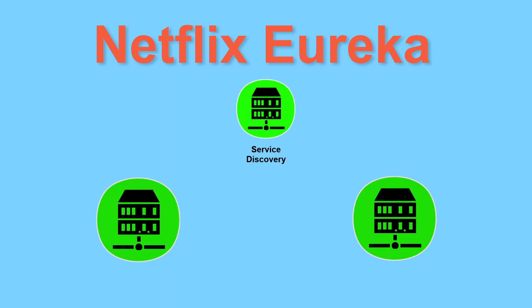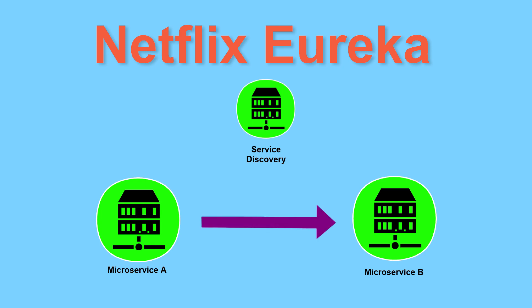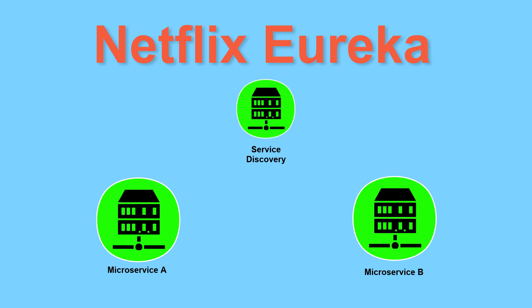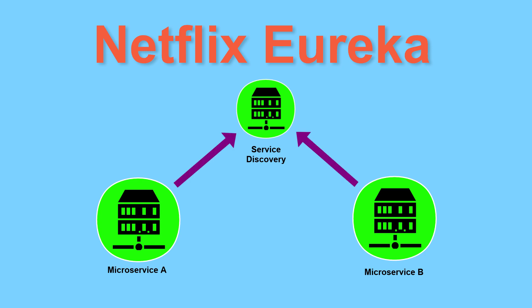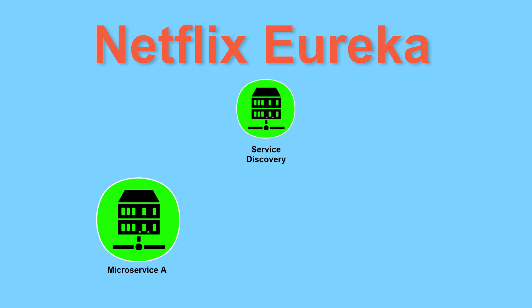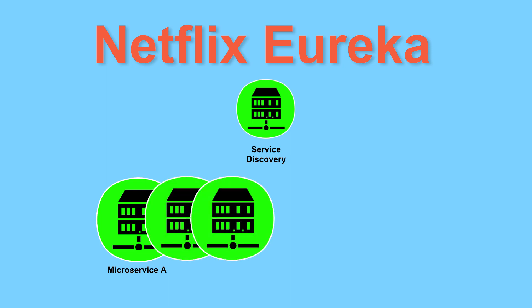This service discovery will first register all the available microservices in your architecture. Each microservice individually will register into the service discovery, just to tell that it's fine and what its IP is. So when microservice A needs to communicate with microservice B, it will first ask about B's address at the service discovery. Then microservice A will use the address given by the service discovery to reach microservice B. The service discovery will check the health of each microservice frequently. This way, if a single microservice becomes unavailable, it won't redirect traffic to it. And when it receives the registration of multiple instances of the same microservice, it will return the address of a different one each time to avoid saturating a single instance.